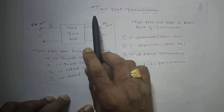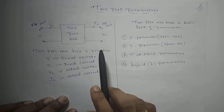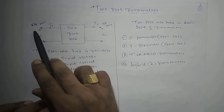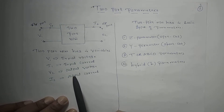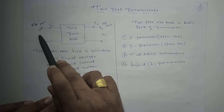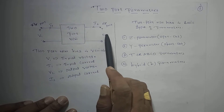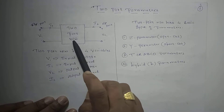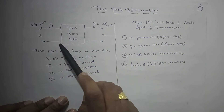Today we are going to start the new chapter: 2-port parameters. Any circuit or network which has two pairs of terminals is called a 2-port network. One pair of terminals where we apply the input is called the input port, and from the other pair of terminals where we observe the output is called the output port. The input is applied, processed by the network, and produces the output.